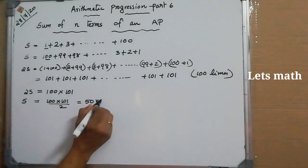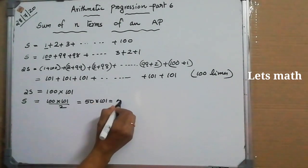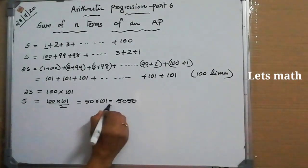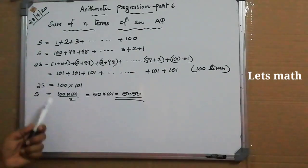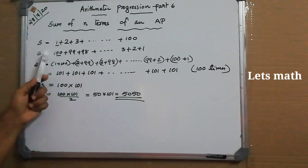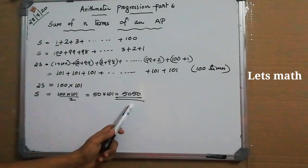So 2S = 100 × 101, which gives S = 100 × 101 / 2 = 50 × 101 = 5050. That is the sum of all positive integers from 1 to 100.